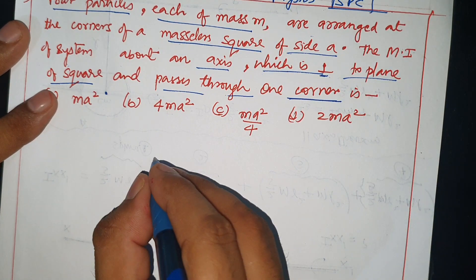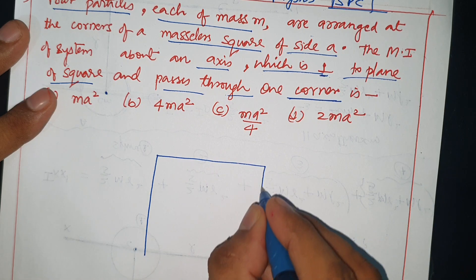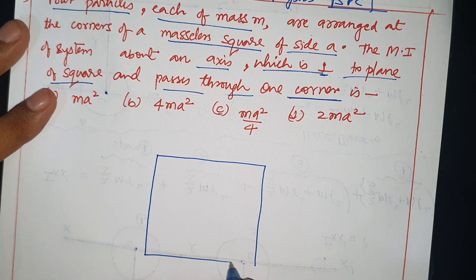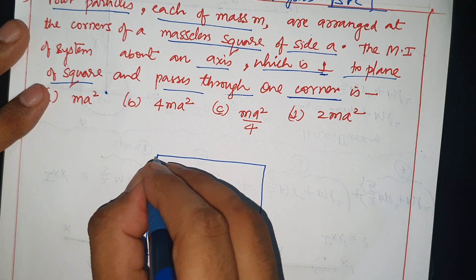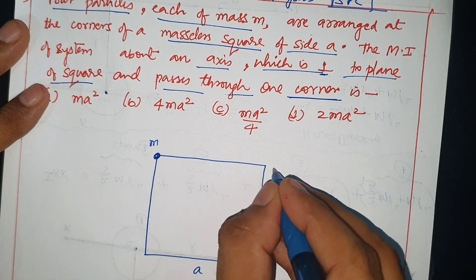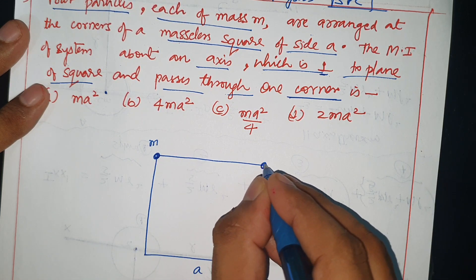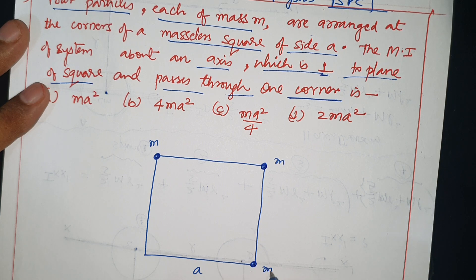Let me draw the diagram. A square, massless square with side a. Point mass small m at each corner. Side a.